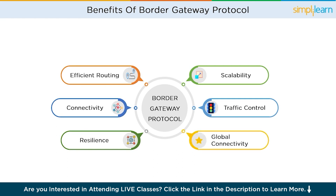Global connectivity. One of the most significant benefits of BGP is its role in enabling global connectivity. BGP allows networks from different countries, ISPs, and organizations to interconnect and exchange routing information. This collaboration facilitates seamless communication and data transfers across borders, making the internet a truly global network. In conclusion, Border Gateway Protocol offers numerous benefits: efficient routing, scalability, multi-home connectivity, traffic control, resilience, and global connectivity.